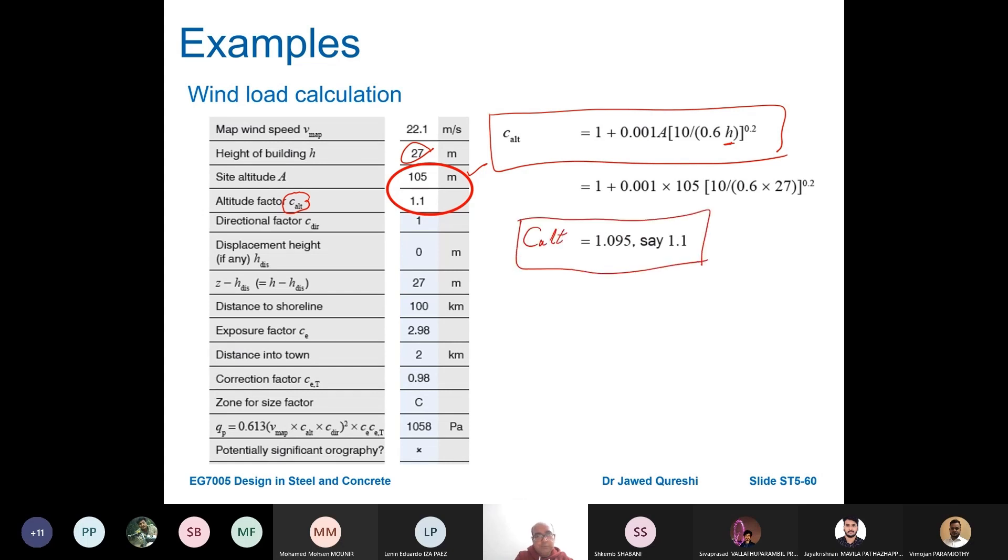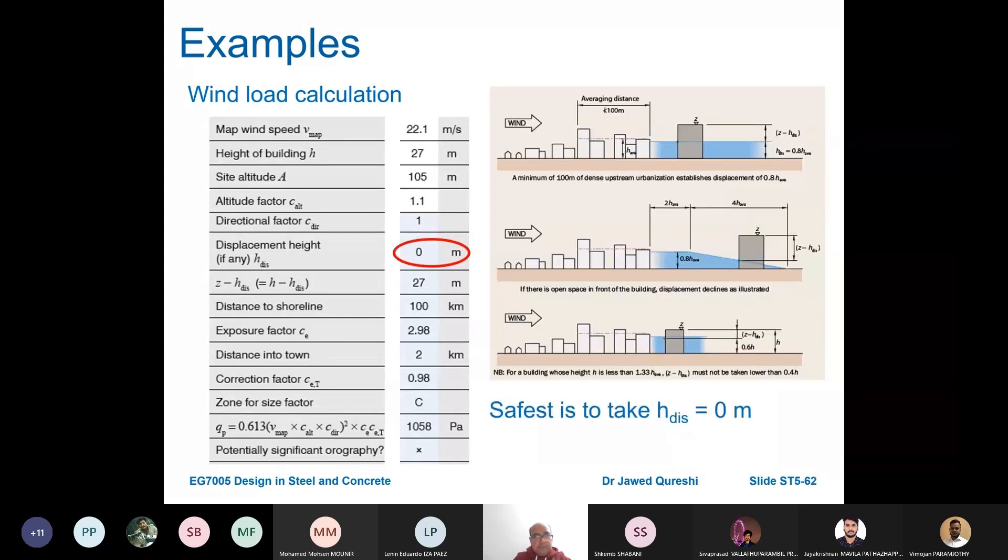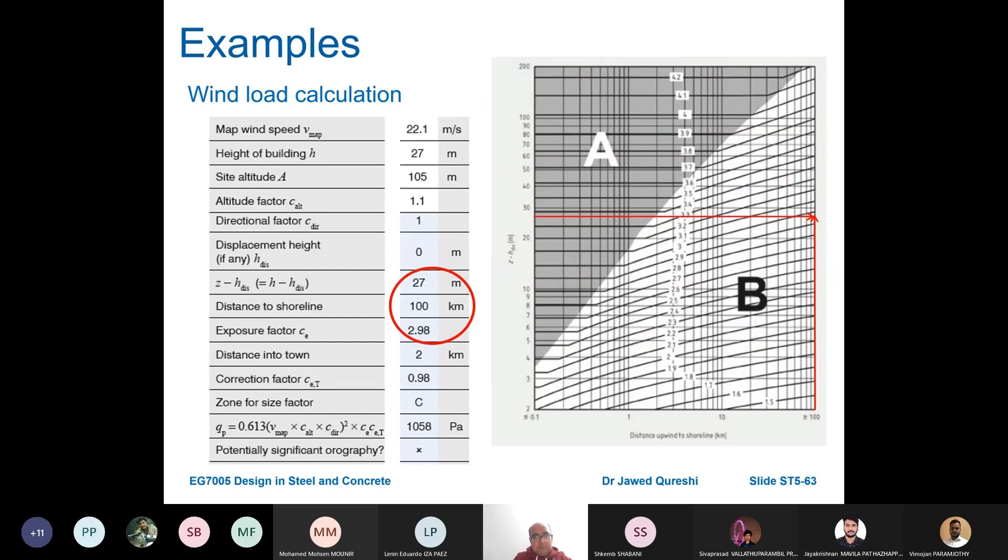The next thing is directional factor. The direction factor depends on the direction of wind blowing. The worst case scenario is to take 1. Next is the displacement height which depends on the depth of your building with respect to other buildings, but it's safest to take h_distance as zero. Then you have this z value which you can work it out.